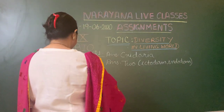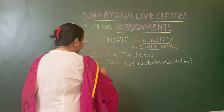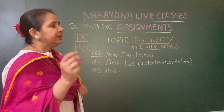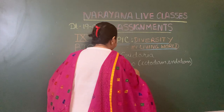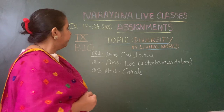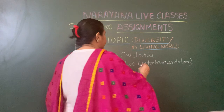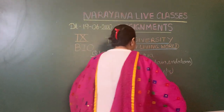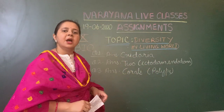Question number three asks: which species of Cnidaria lives in colonies? The answer is corals. Corals are the species of Cnidaria that live in colonies. They are marine animals present in sea water, and the individual corals are called polyps, but collectively their colonies are termed as corals.